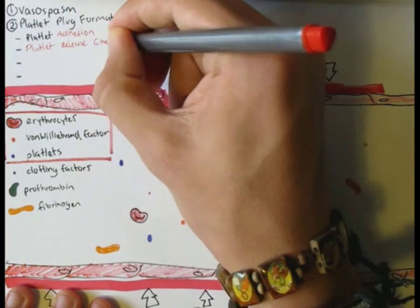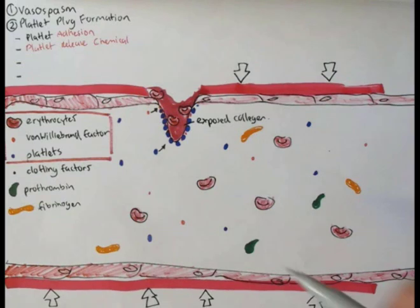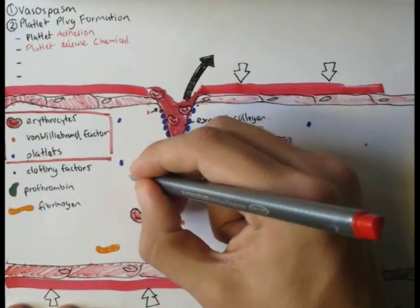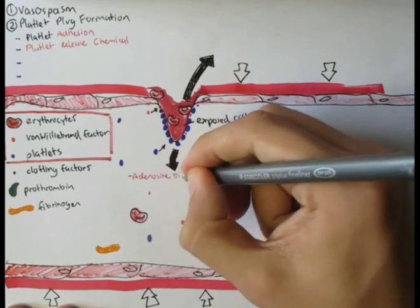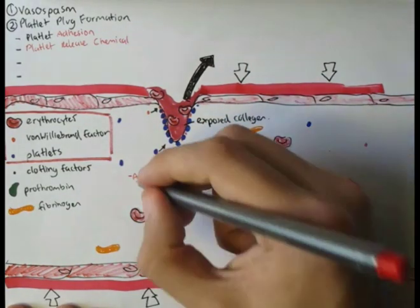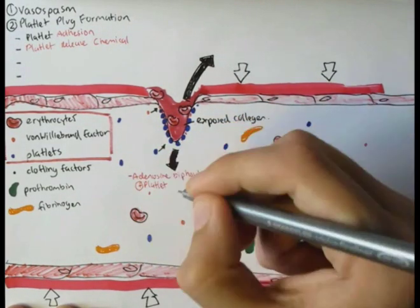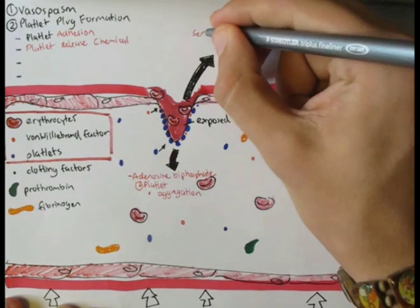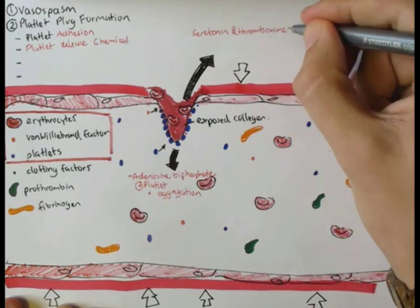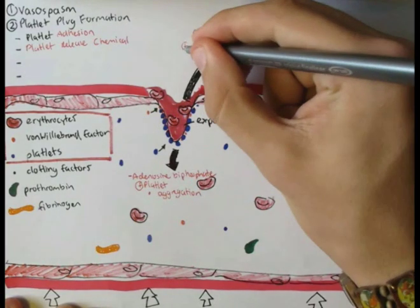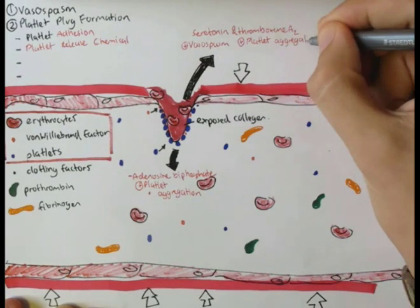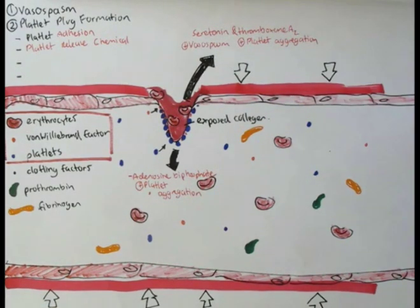After platelet adhesion, platelet release reaction takes place, where the platelets get more sticky and begin releasing chemicals which tell more platelets to come and join the party and also enhance vasospasm and slow down blood. These chemicals released are adenosine diphosphate, which tells more platelets to come, and there's also serotonin and thromboxane A2, which enhances vasospasm and enhances platelet aggregation, which is our third step in platelet plug formation.